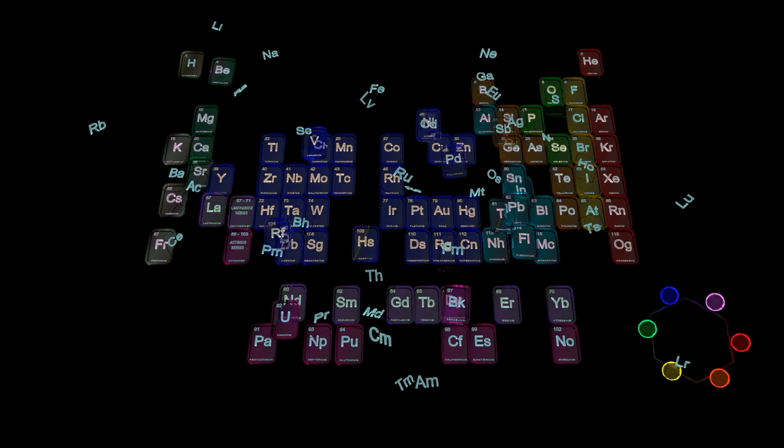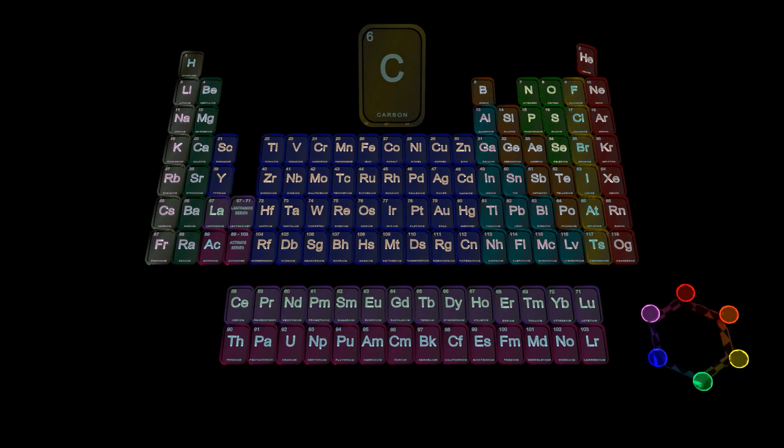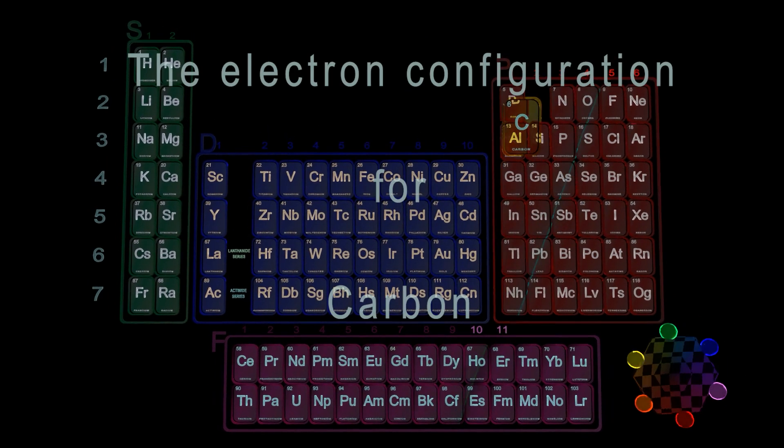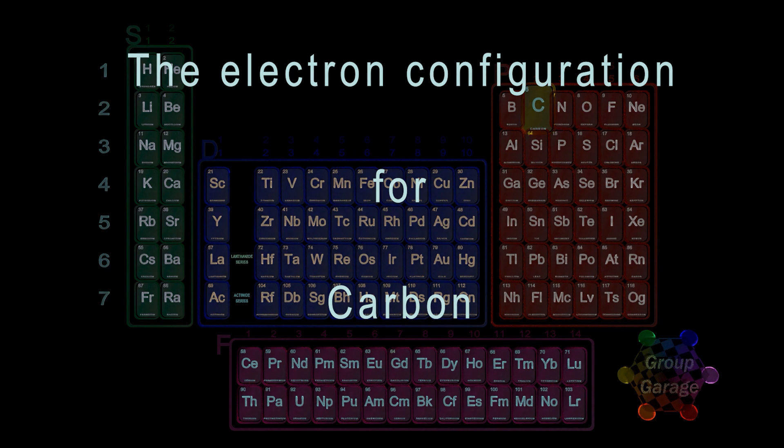Welcome to our quick tutorials on how to determine and write an electron configuration based on an element's location in the periodic table. This video we will look at the electron configuration for carbon.